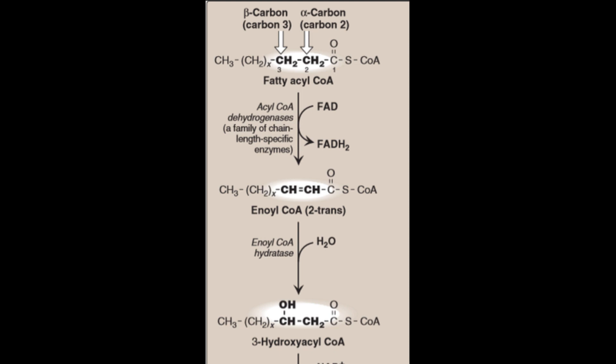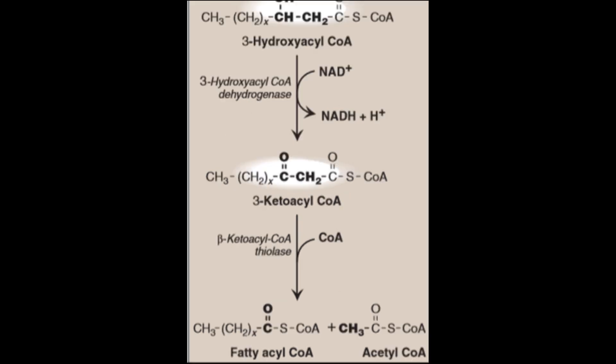After that, the enzyme 3-hydroxyacyl coenzyme A dehydrogenase will reduce the carbon, and then we have beta-ketoacyl coenzyme A thiolase, which will finally give us acetyl coenzyme A and the fatty acyl coenzyme A, which is shorter.